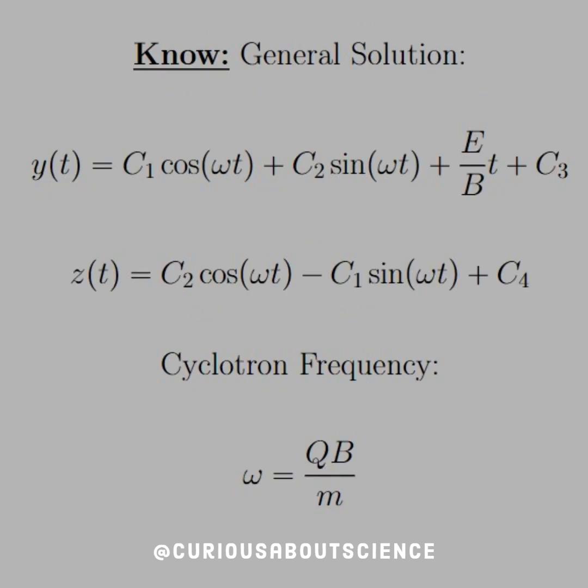Things to know for this question: The general solution of the equations of a cycloid are given as follows. These are coupled equations, so that's why c2 and c1 are as such. And the cyclotron frequency is defined as omega equal qb over m.